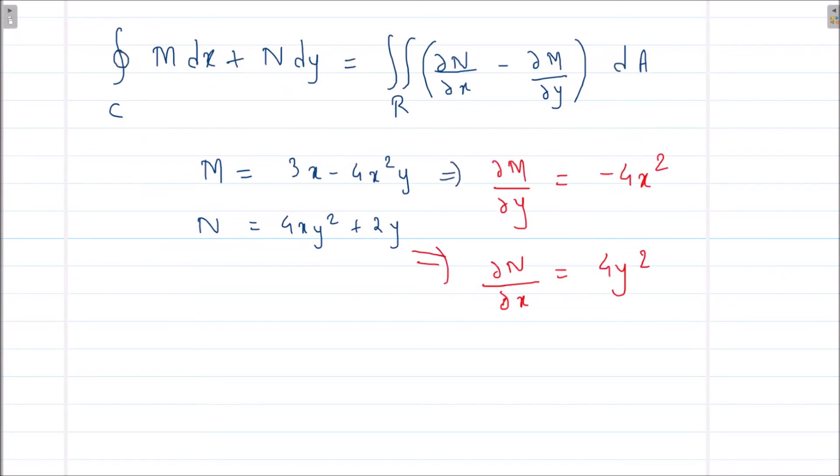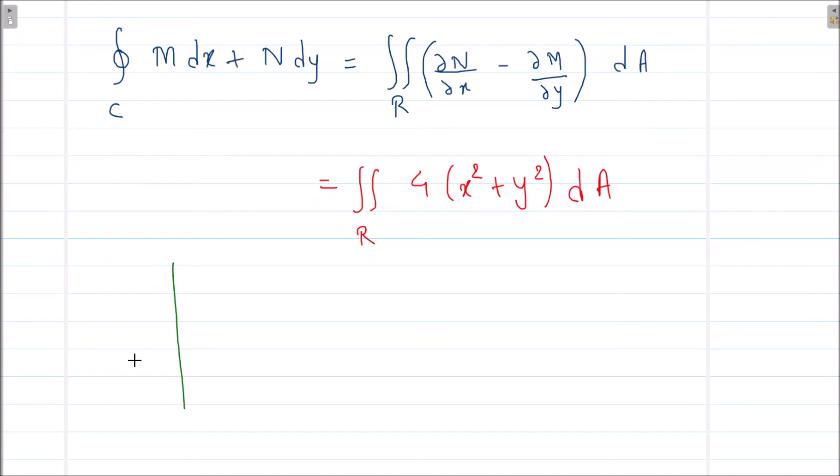When we do that, this is our ∂M/∂y and ∂N/∂x. And now we substitute this value in this place. When I do that, what do we get? Four times (x² + y²). What is given to us? The region is a circle of radius 2, right?